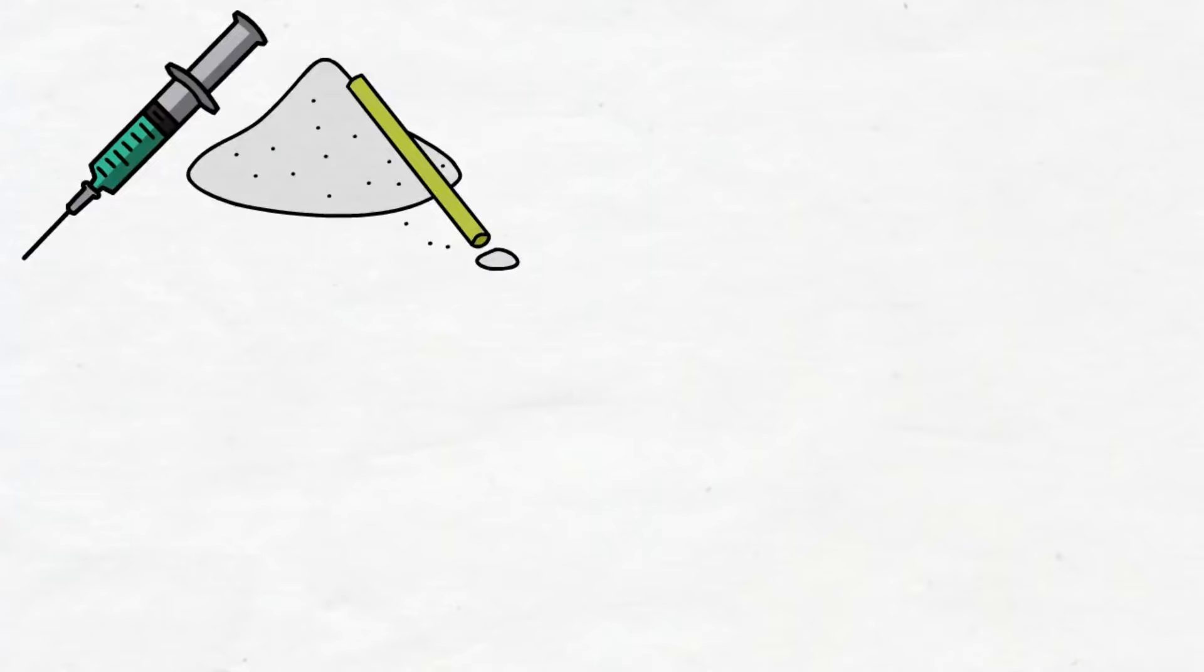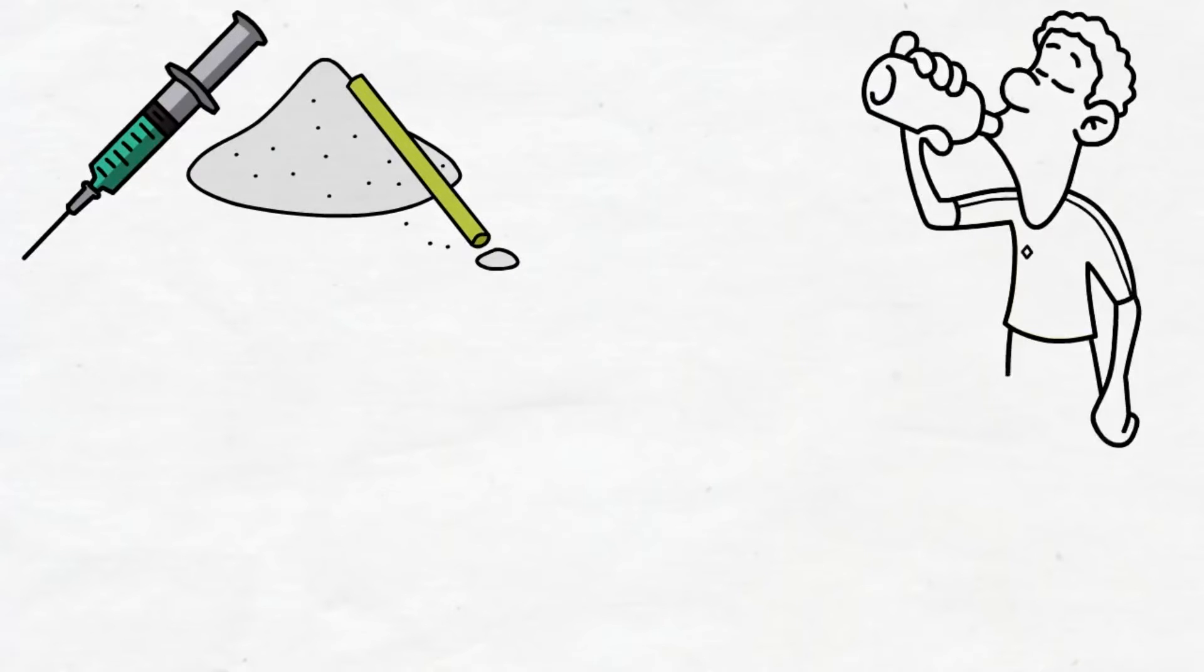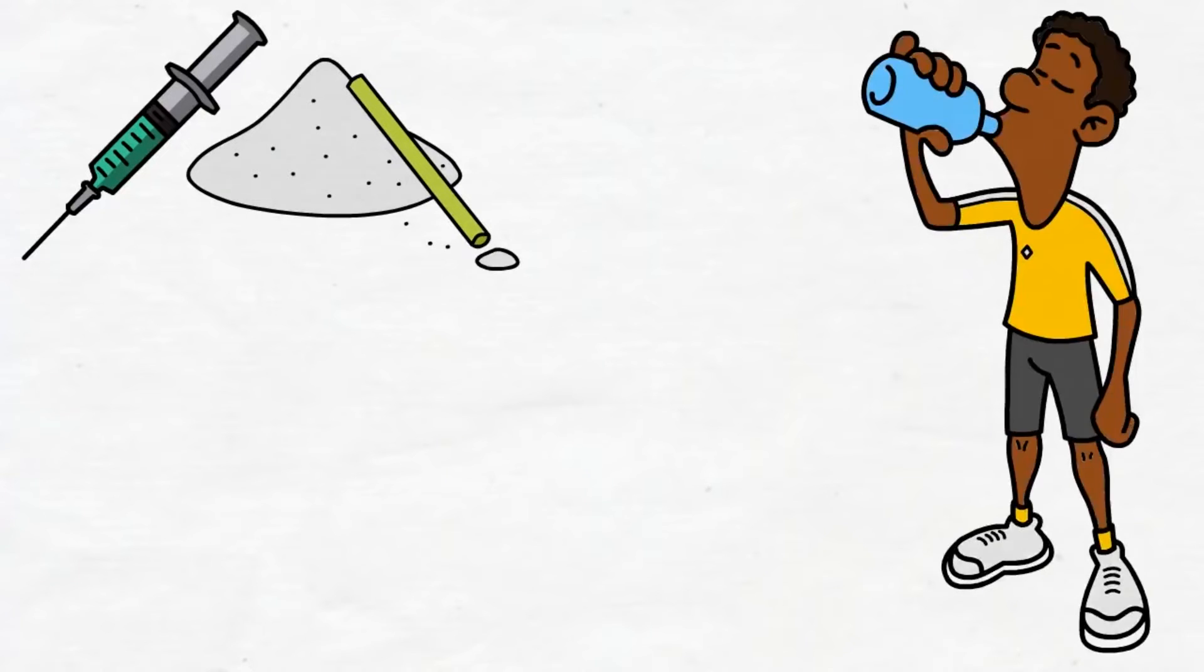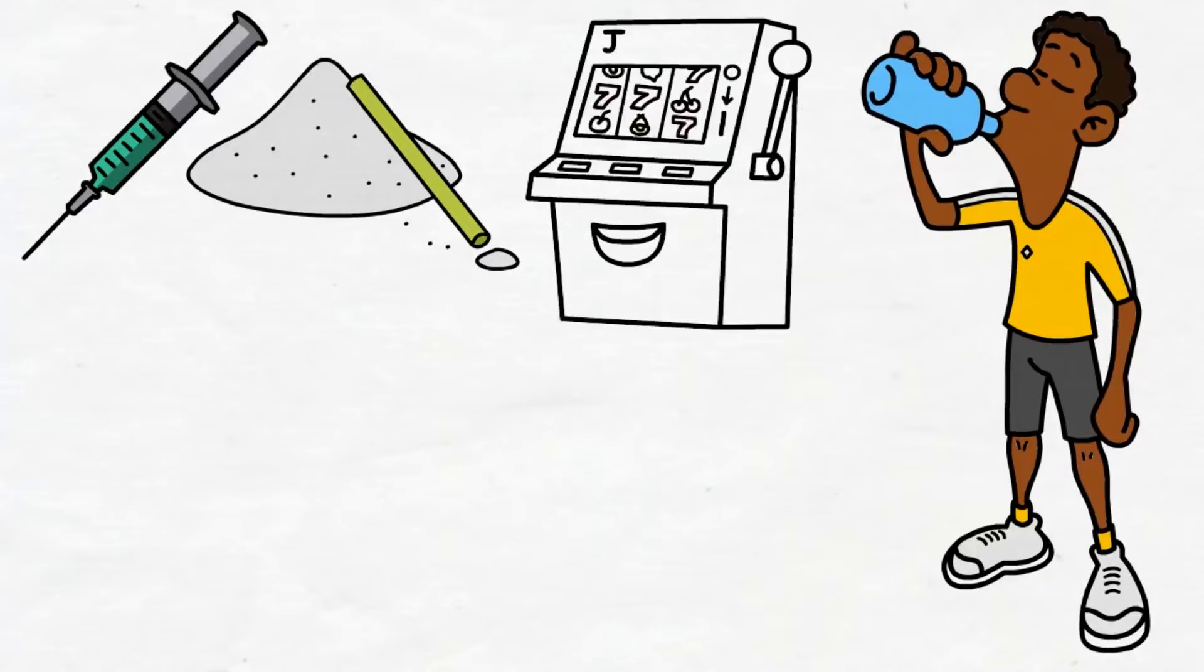Of course, it has to be noted that nearly everything releases some amount of dopamine. Even drinking water when you're thirsty does. But the highest dopamine release happens when you get a reward randomly. One such example is playing on a slot machine in a casino. Even if you've only been losing money until that point, you eventually expect to get a bigger reward. You just don't know when it could happen.